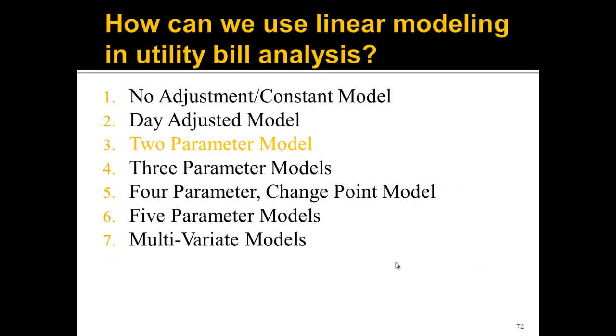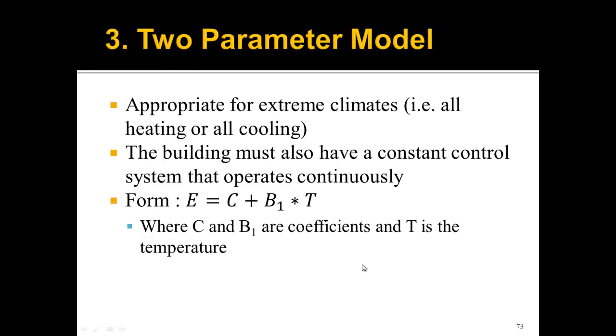Now let's look at the two parameter model. The two parameter model is appropriate for extreme climates, so if you have all heating or all cooling. The building must also have a constant control system that operates continuously. It shouldn't be shut off at night or during some months of the year. It should have continuous control. This is very specific, not generalized at all. So that's one drawback of this model.